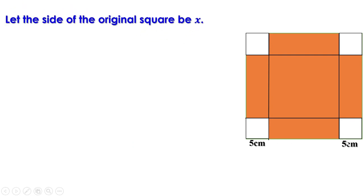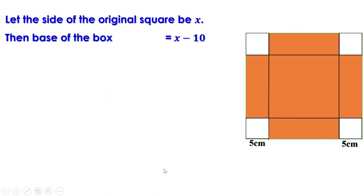Let the side of the original square be x. That is, this length is x; this is 5 and this is 5, so when we subtract 10 we get the side of the inner square, which is the base of the box formed by bending the parts upwards. So the side of the base of the box is x minus 10.